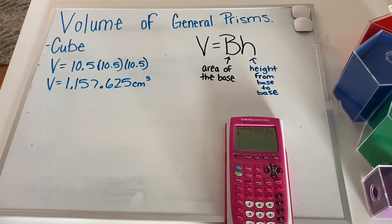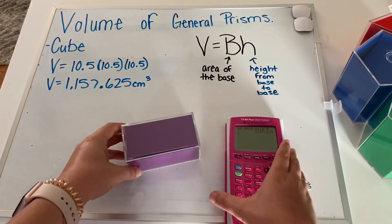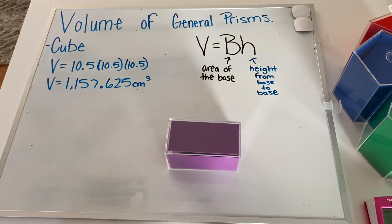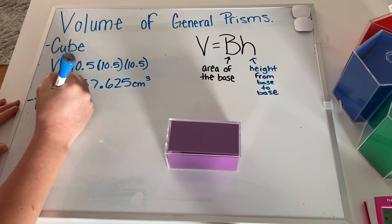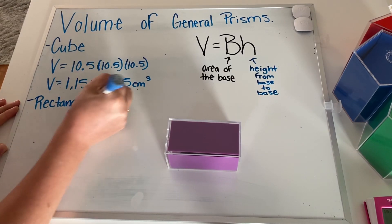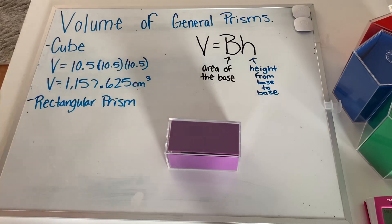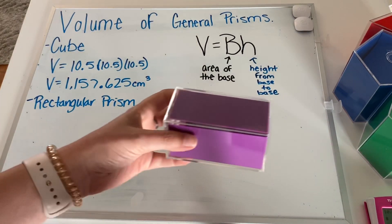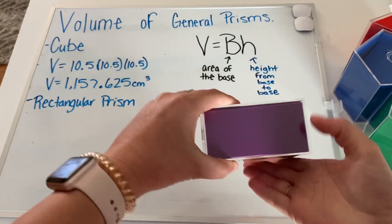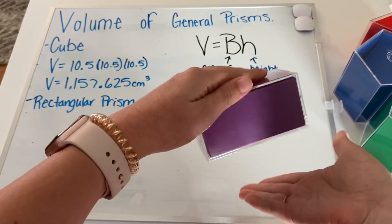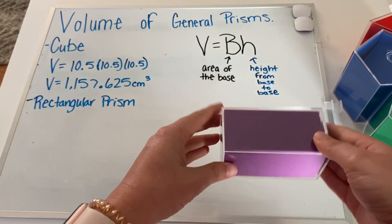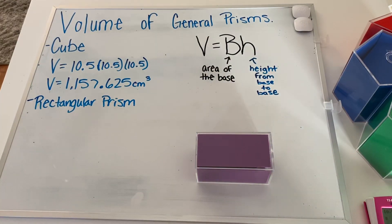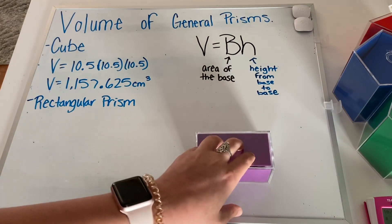So then we said we were going to look at the rectangular prism. For my rectangular prism, again, I am seeing those bases. Because it's a prism, they have to be parallel. It's named a rectangular prism because there's a rectangle parallel to a rectangle. We could turn it a different way and it wouldn't actually change anything. So we need to find the area of the base.